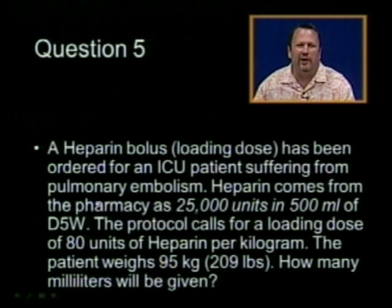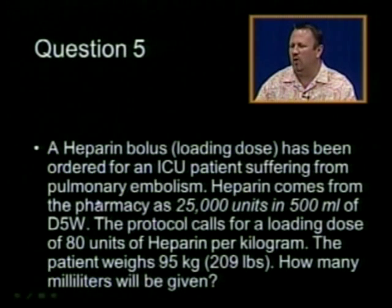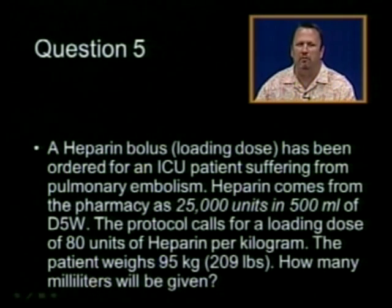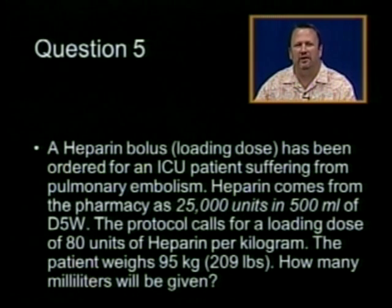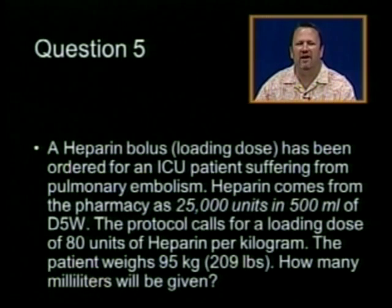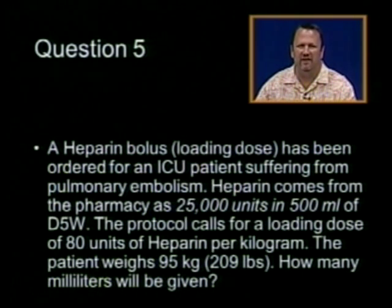A heparin bolus, which is a loading dose, has been ordered for an ICU patient suffering from a pulmonary embolism, a blood clot in their lung. The heparin comes from the pharmacy as 25,000 units of heparin in 500 milliliters of D5W.